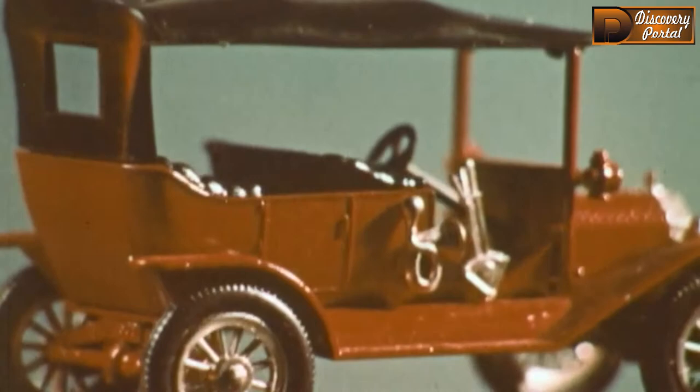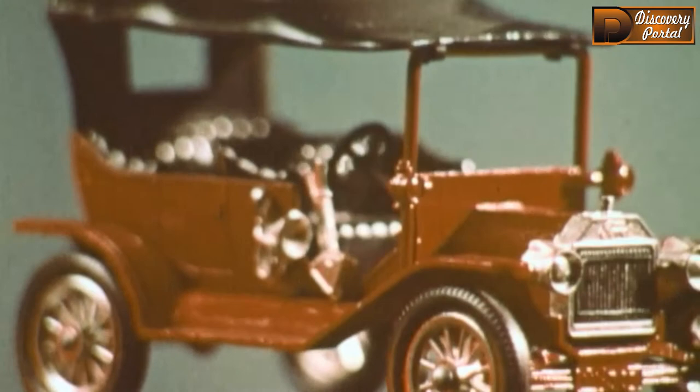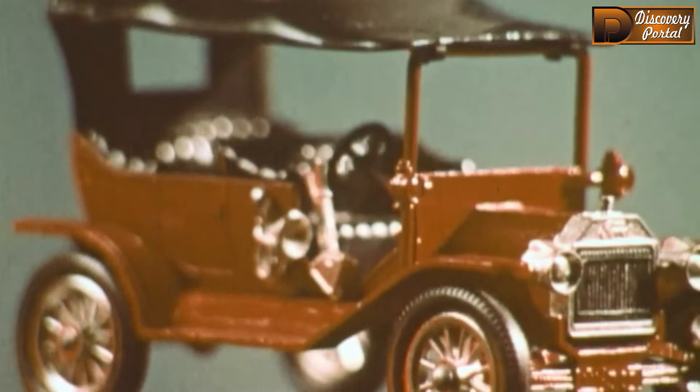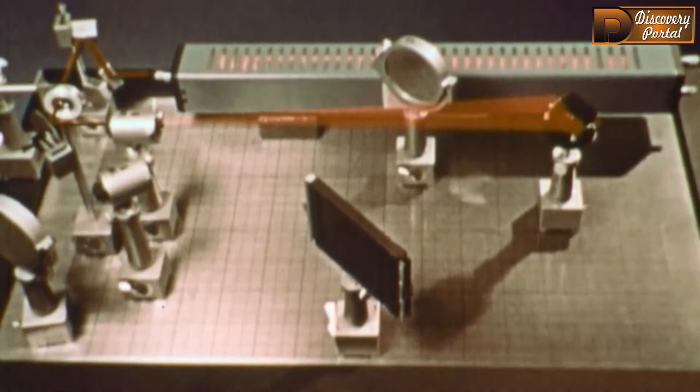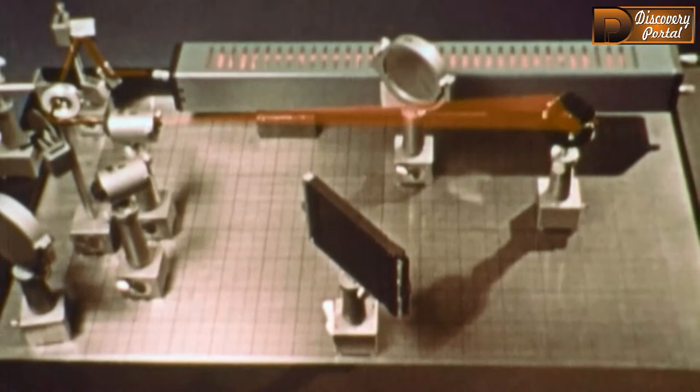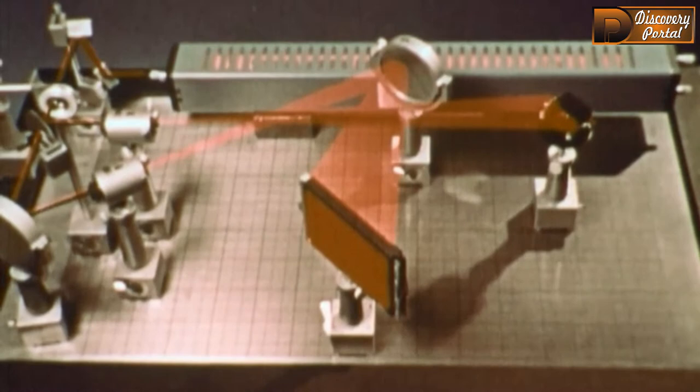If this car were illuminated with a laser, every point on it would reflect some laser light. This is how a hologram is made. Part of the beam is used to illuminate the car. We'll call this the object beam. A second beam, called the reference beam, shines directly on the emulsion and interferes with the light reflected from every point of the car.